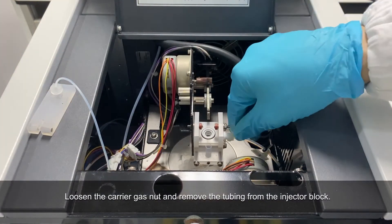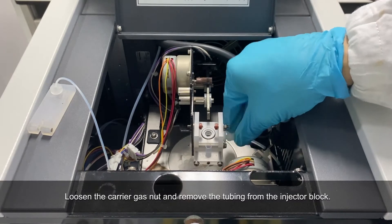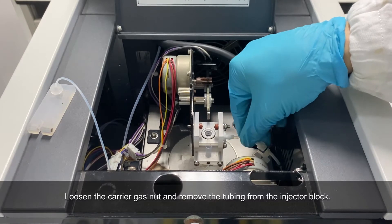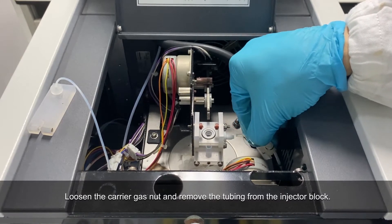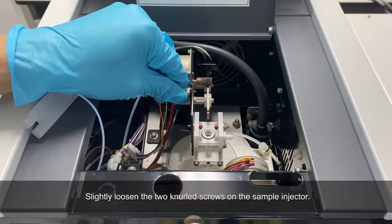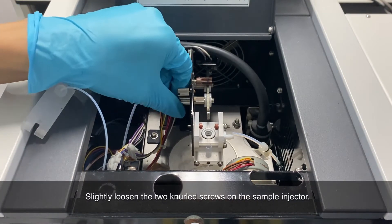Loosen the carrier gas nut and remove the tubing from the injector block. Slightly loosen the two screws on the sample injector.